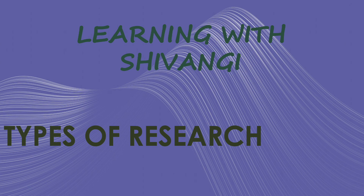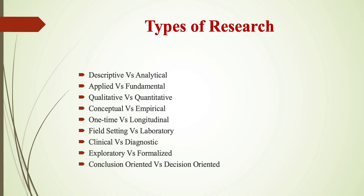According to purpose and according to motive, there are several types of research used in research methodology. These are: descriptive vs. analytical, applied vs. fundamental, qualitative vs. quantitative, conceptual vs. empirical, one-time vs. longitudinal, field setting vs. laboratory, clinical vs. diagnostic, exploratory vs. formalized, and conclusion-oriented vs. decision-oriented research.